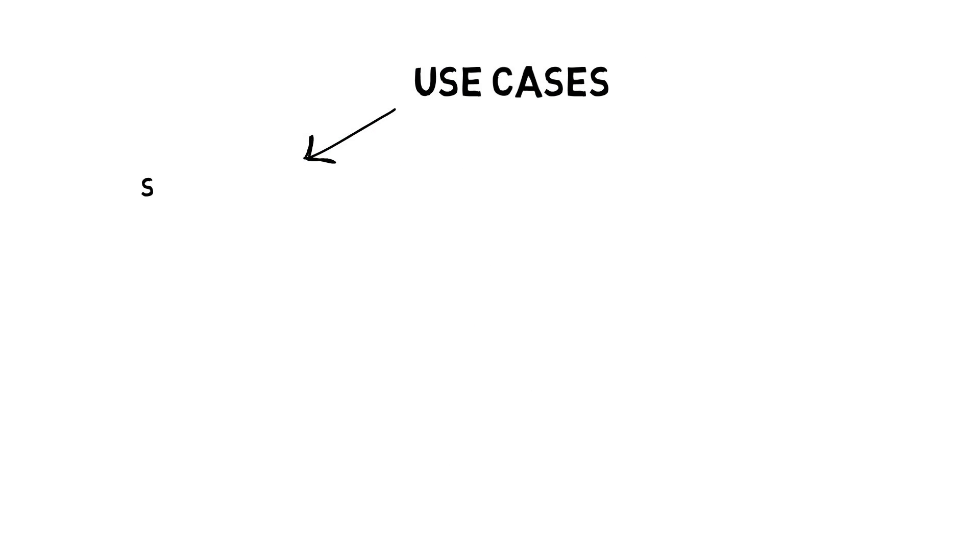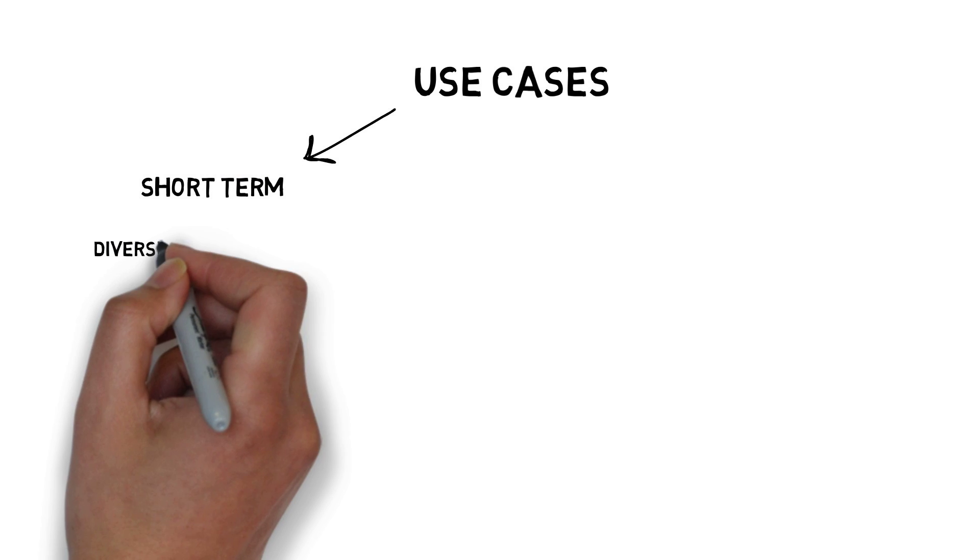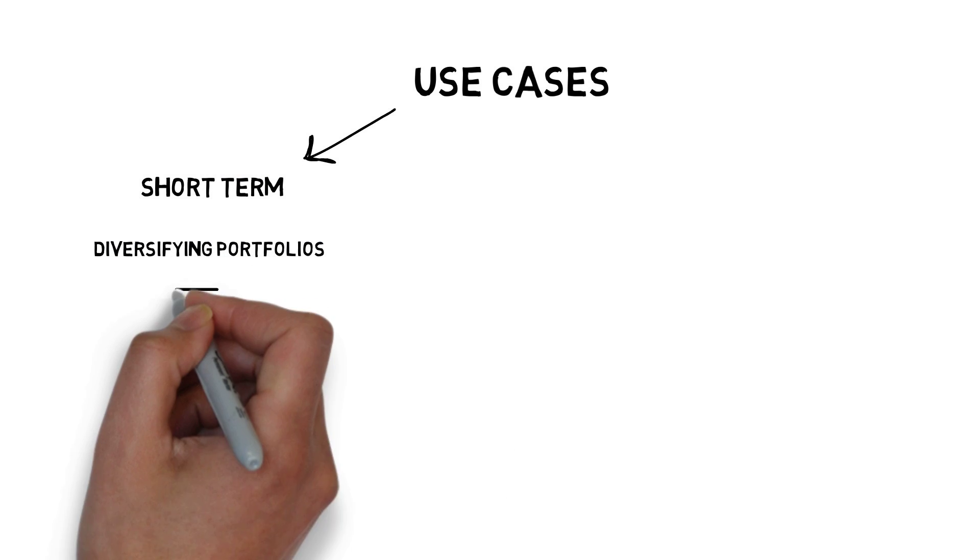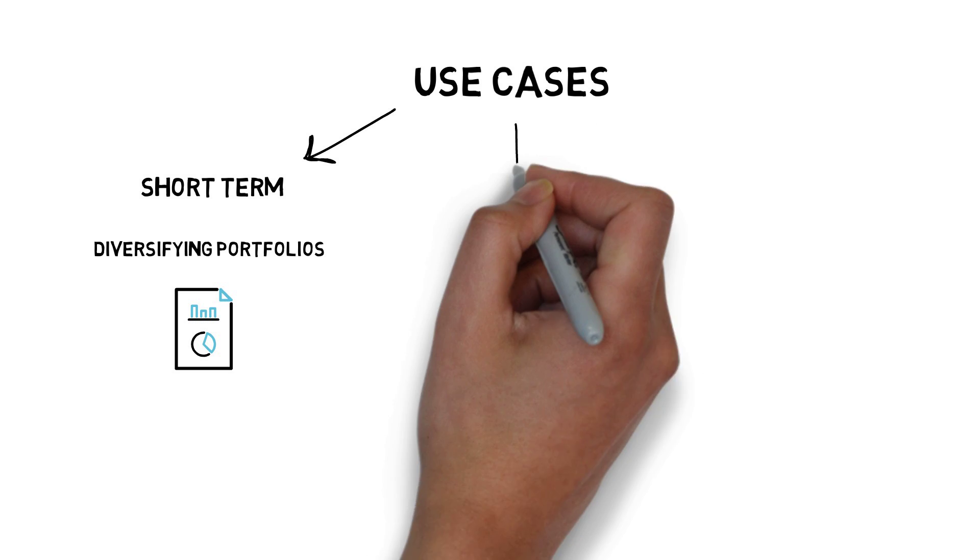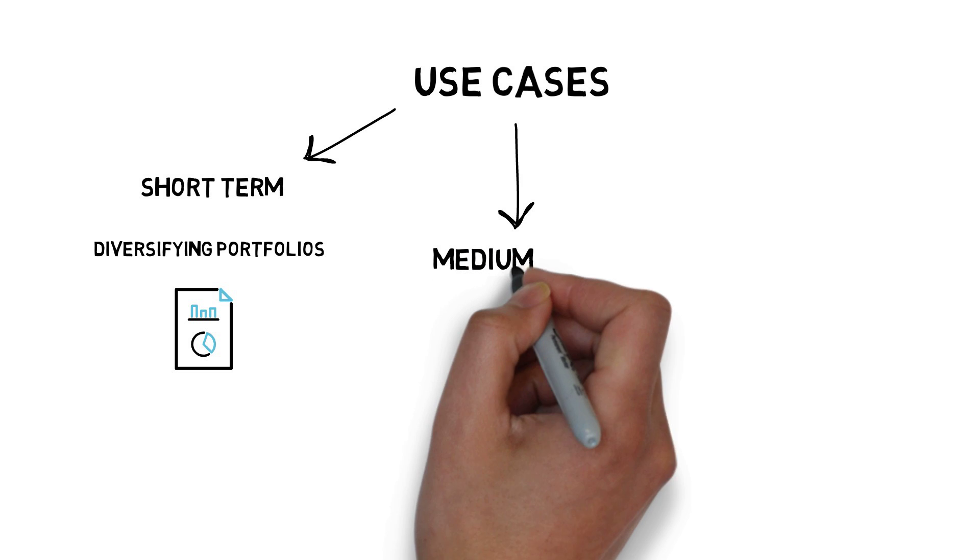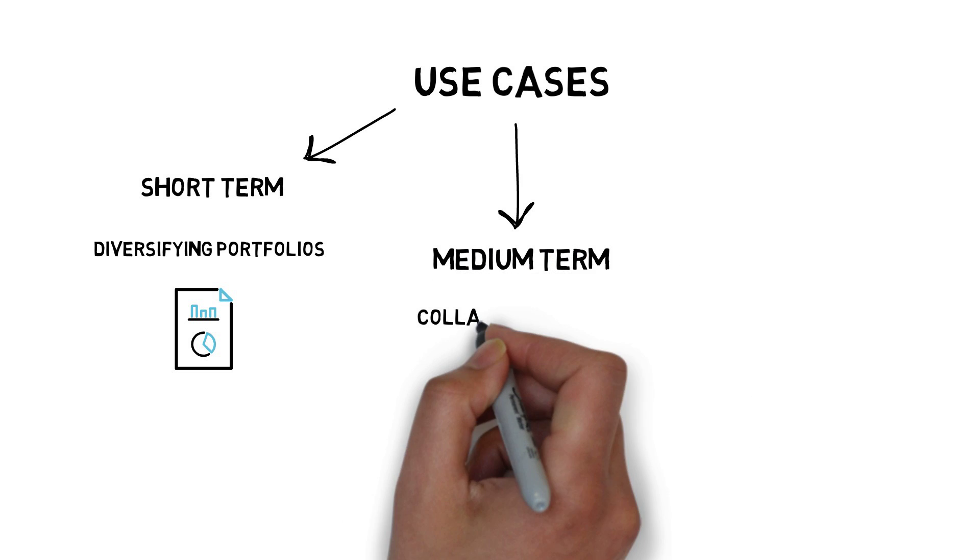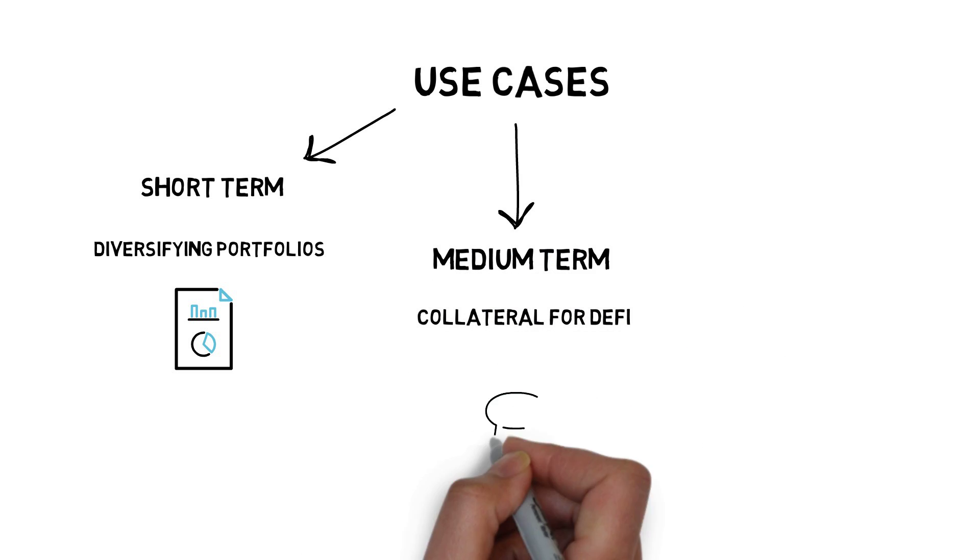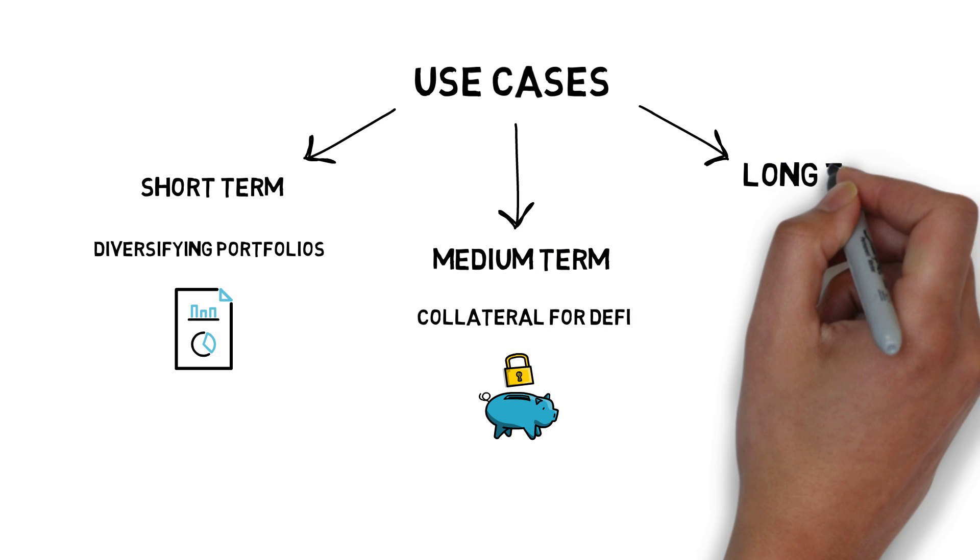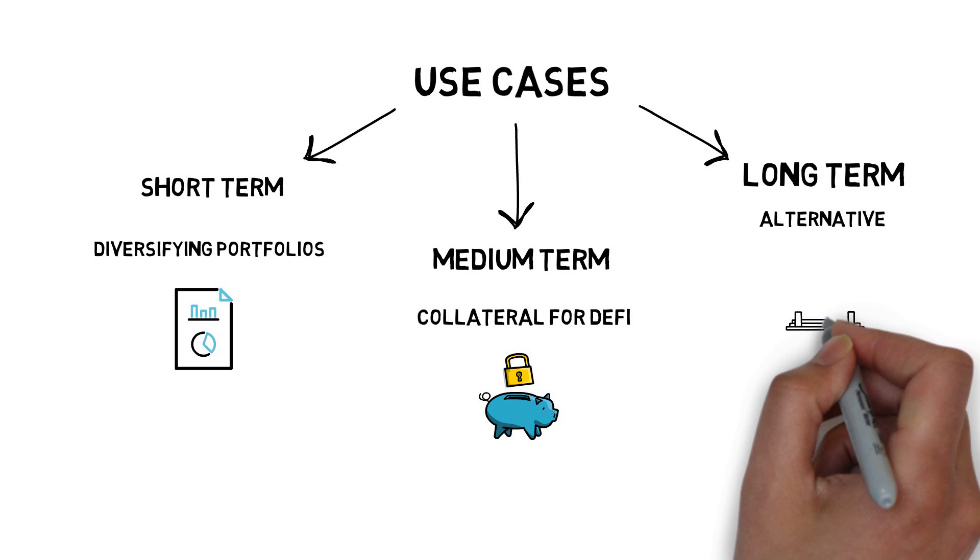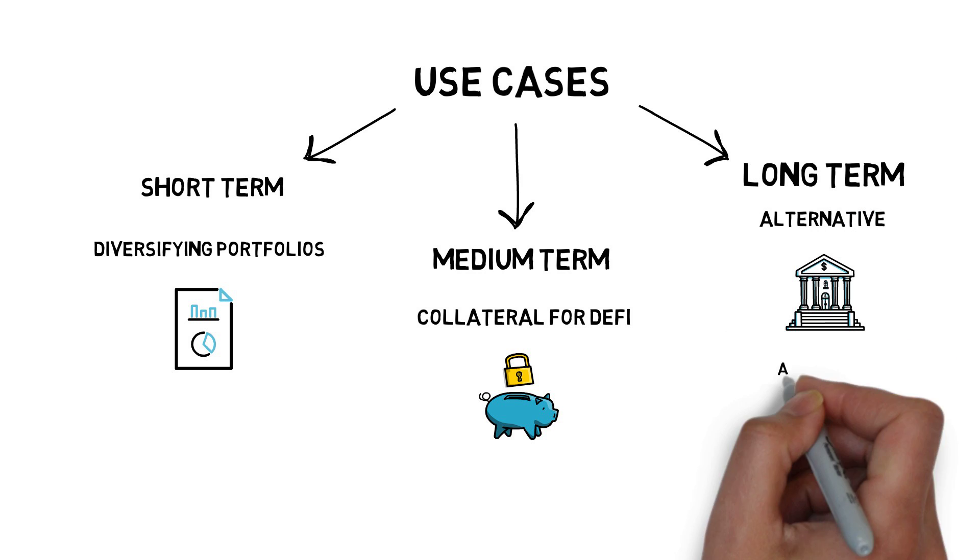Ampleforth, in the short term, aims at diversifying cryptocurrency portfolios by being less correlated to the price of Bitcoin compared to other cryptocurrencies. In the medium term, it aims at being used as collateral in DeFi protocols. The long term goal for Ampleforth is to create an alternative to central bank money that is adaptable to shocks.